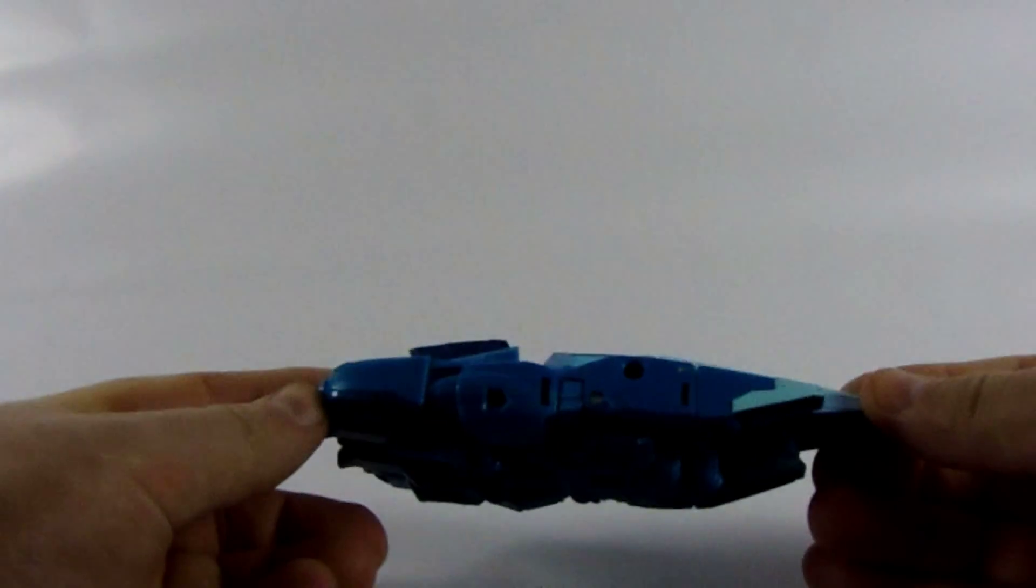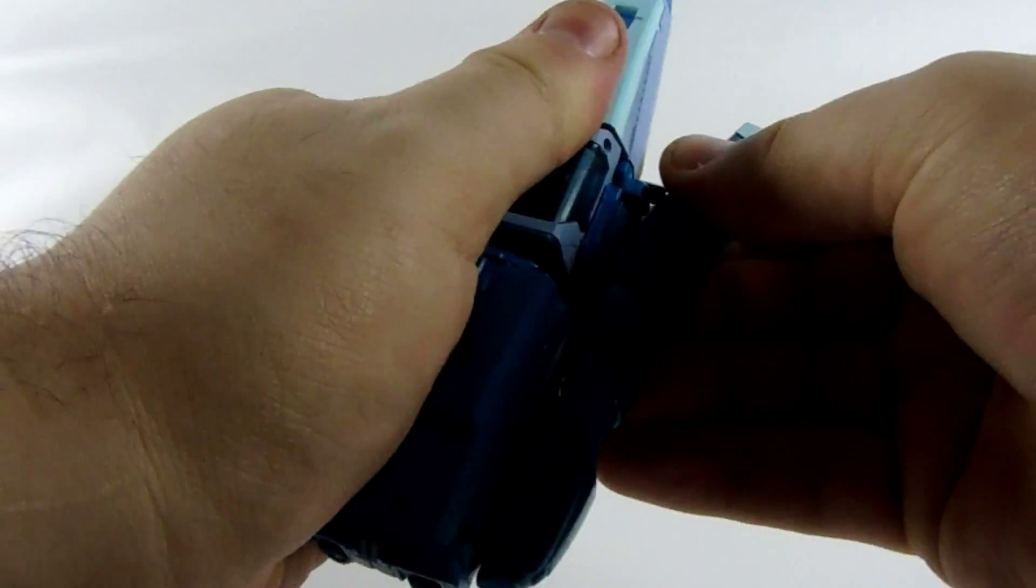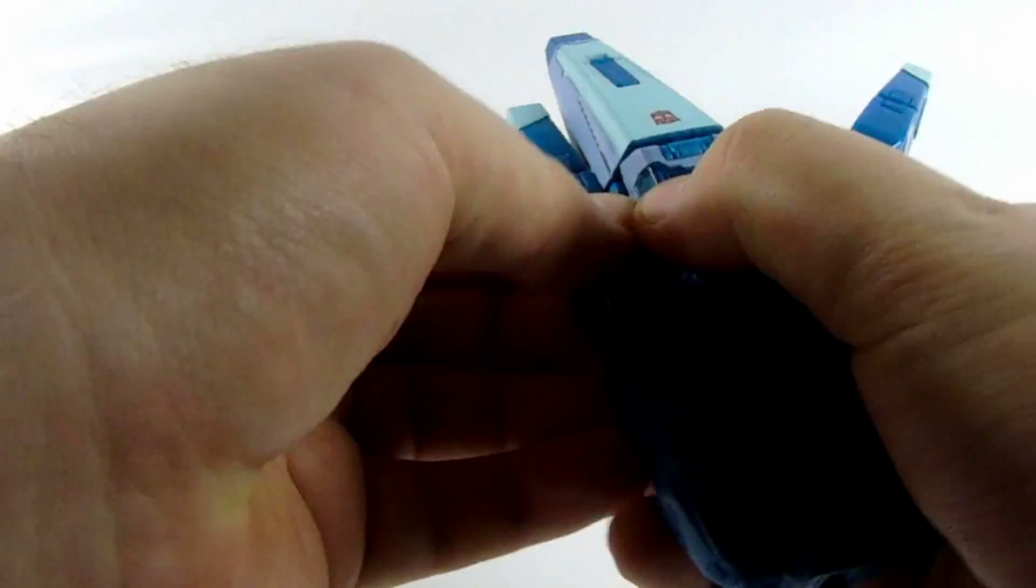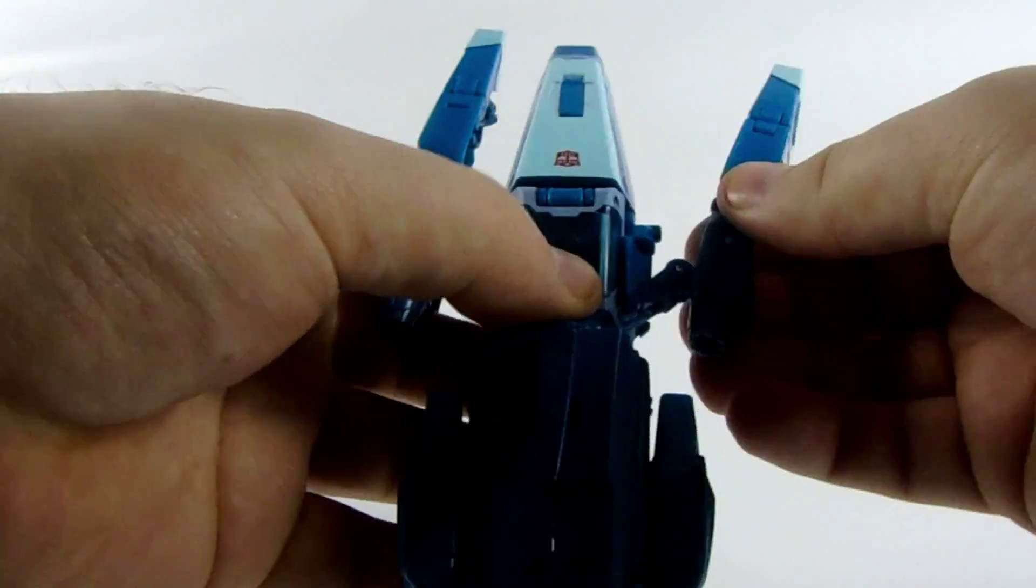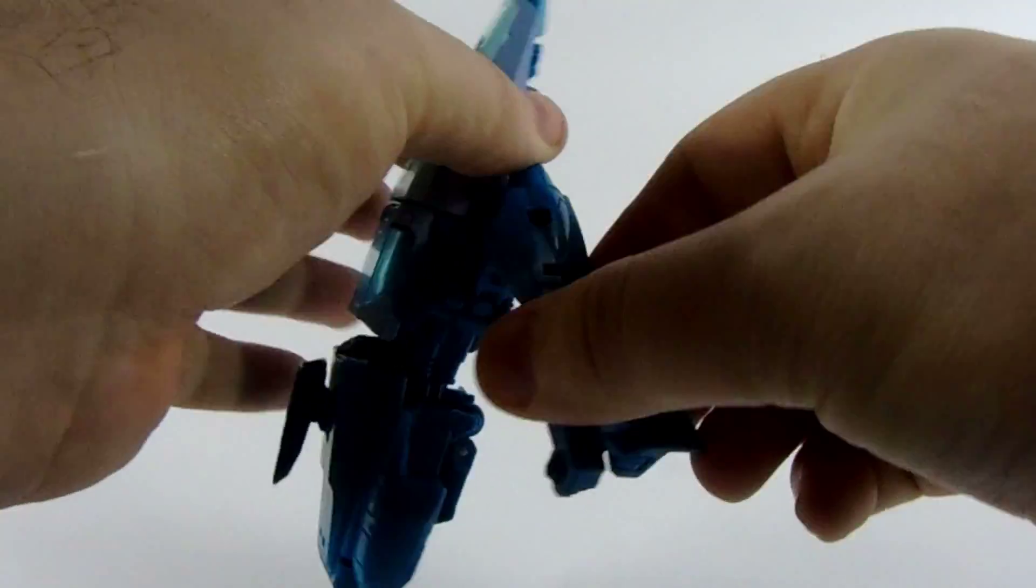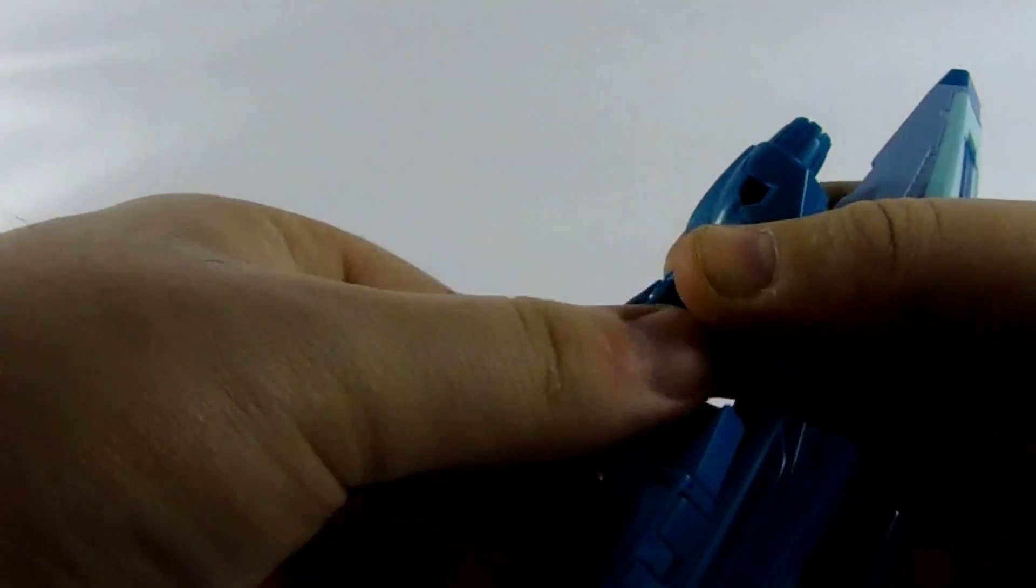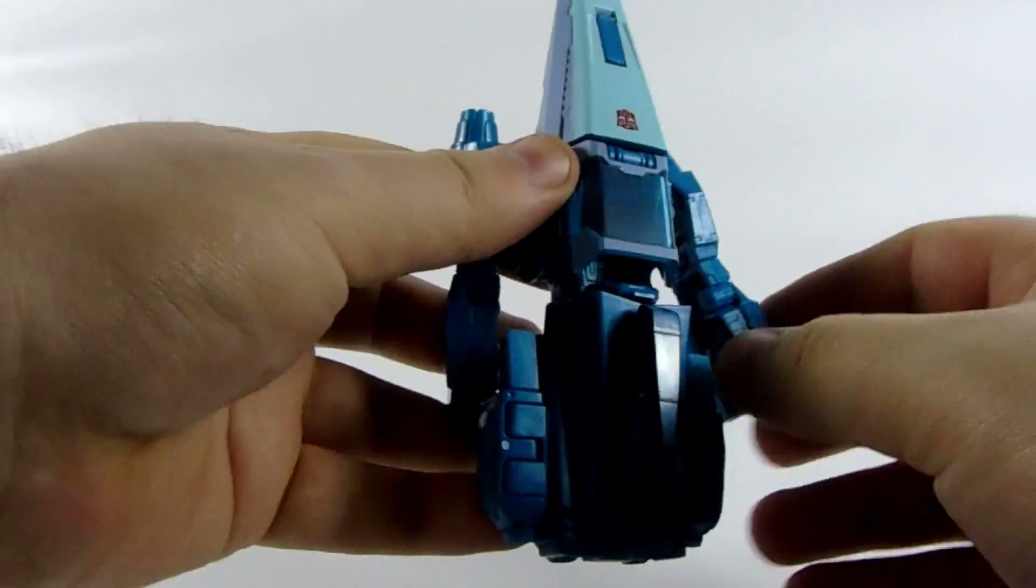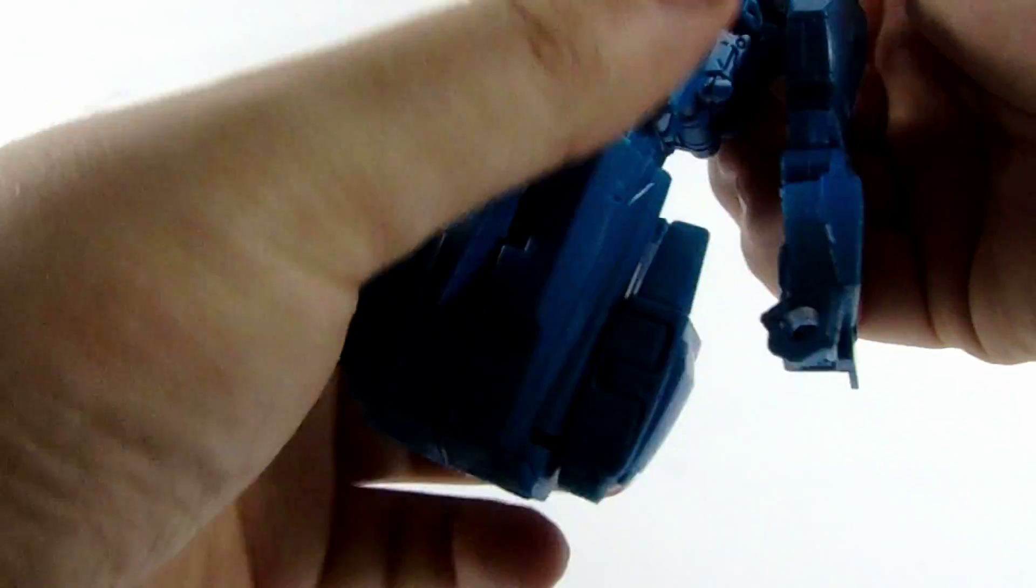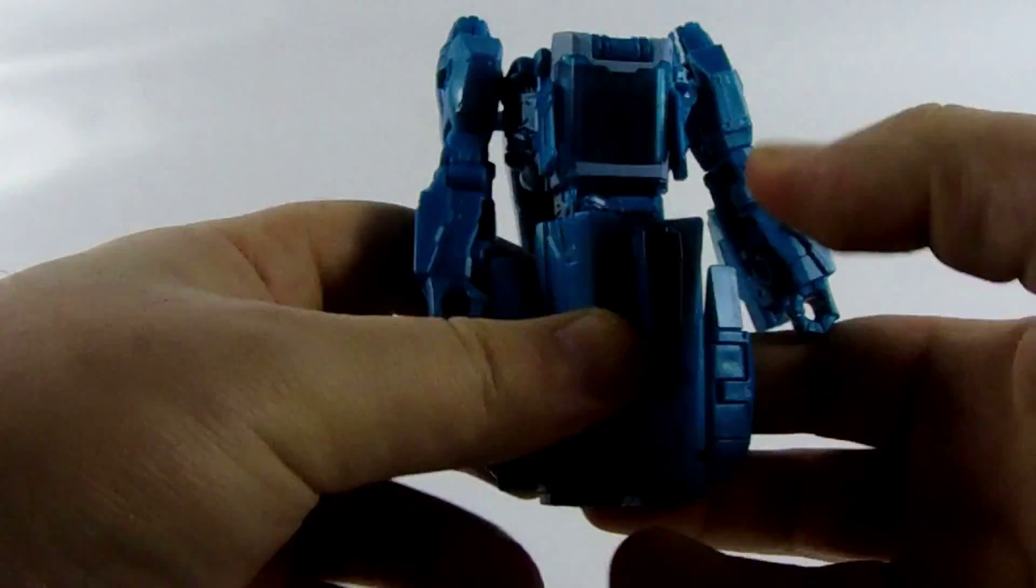Right, so I suppose we best get him into his robot mode. First of all, pull his arms out and turn them around. These bits pull back on a hinge just like that, reveal his hand. Second arm's just the same. Sorry, he's a bit tight. I haven't really transformed him since I got him.